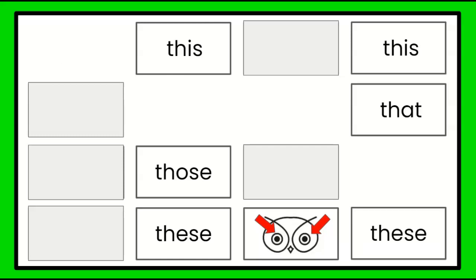Eyes. That's plural — more than one. So if we have more than one, we'd either say these or those. Are they close up to us or are they far away? Well, I don't see any dotted lines, so that means they must be close up, which means we're talking about these eyes.